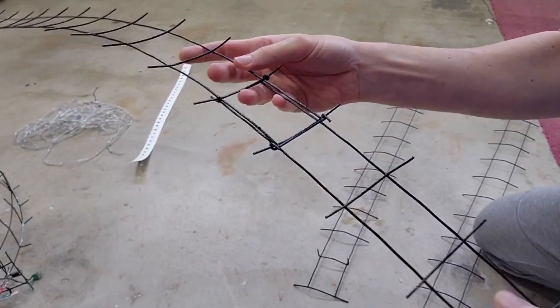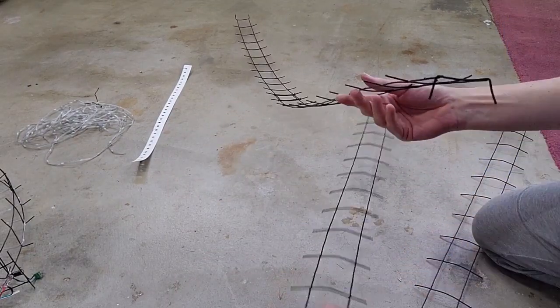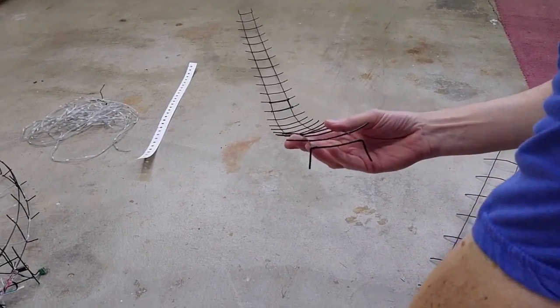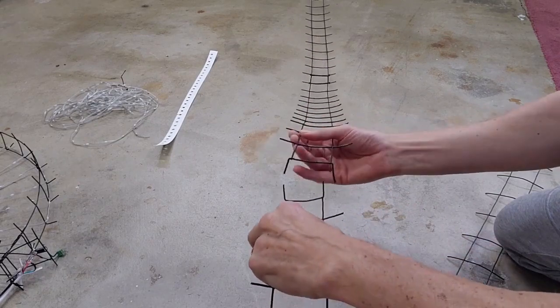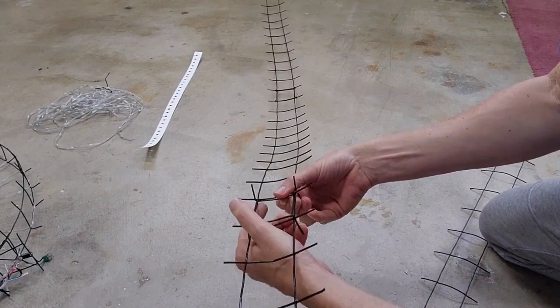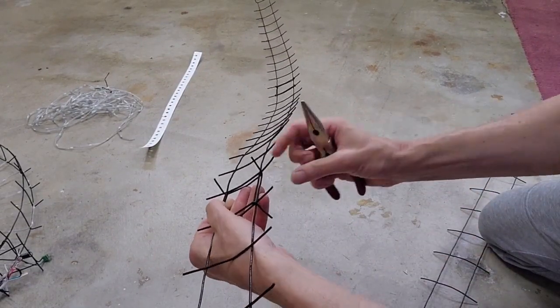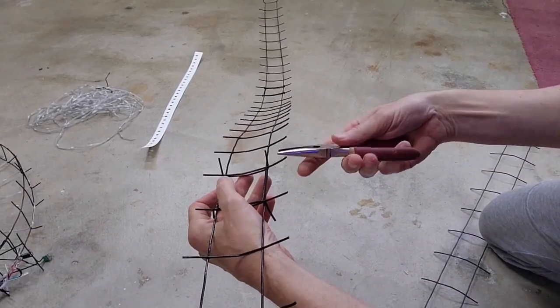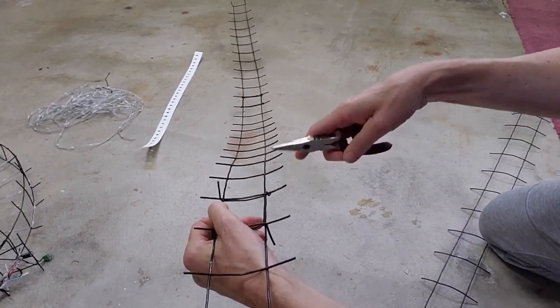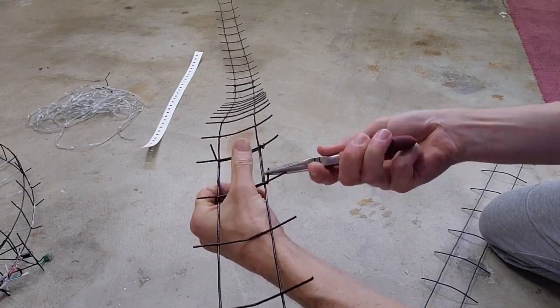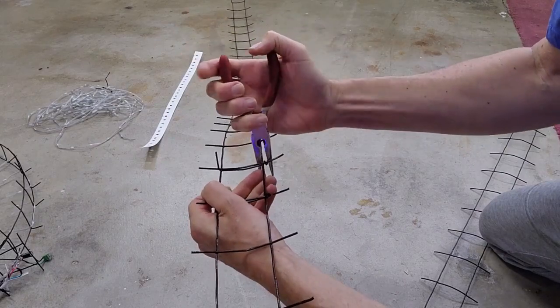We're going to do that again with the next section. I usually would just set this on the floor and do it, but trying to do the video it's a little more awkward. We're overlapping these, then twist this around, twist this one around, and pinch them for tightness.